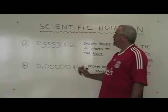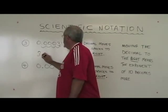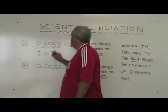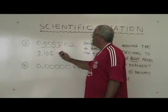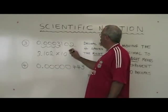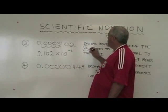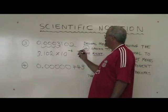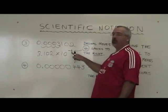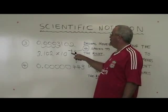My new number becomes 3.102 times ten to the negative four. Because I move four spaces, this digit and the exponent of ten is a four.